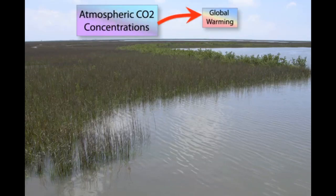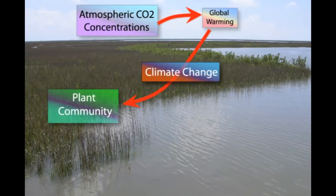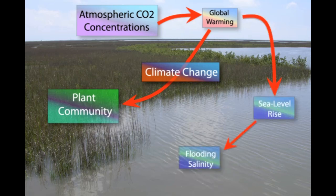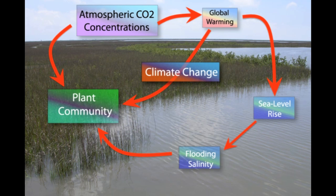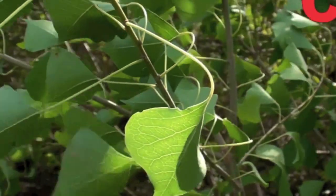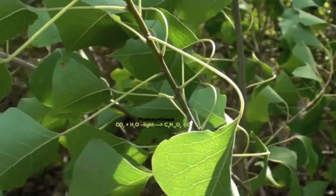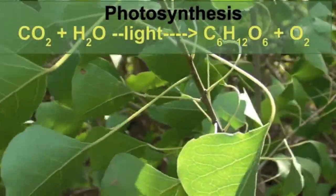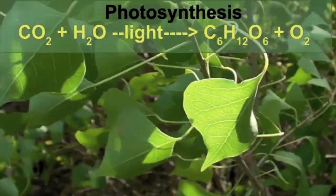CO2 being a greenhouse gas will contribute to global warming and changes in climate, which will affect plant communities. Rising global temperature also contributes to sea level rise, which will alter flooding and salinity regimes, affecting wetland plant growth and distribution. CO2 also has a direct fertilization effect on plants. Plants respond to higher CO2 with increases in net photosynthesis and water use efficiency, leading to greater productivity.